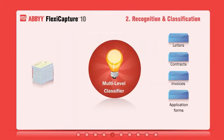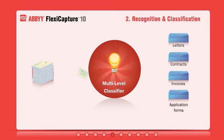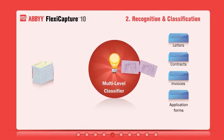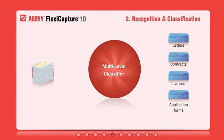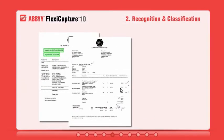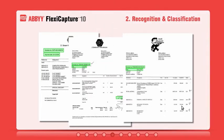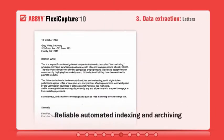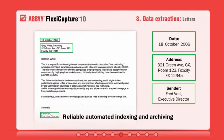ABI FlexiCapture is enriched with intelligent classification and data extraction technologies that are easy to configure and maintain. The system can be easily trained by inputting sample images to help the classifier learn to identify documents and extract data automatically. As a result, FlexiCapture separates the mix of incoming images by document types. The new auto-learning capabilities utilize a simple point-and-click feature to create layout descriptions and define document types for classification. Captured information can be used for automated indexing and archiving.